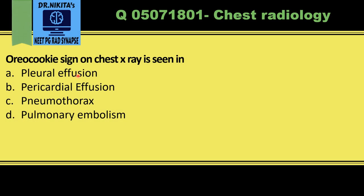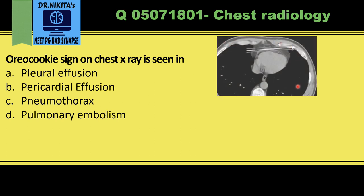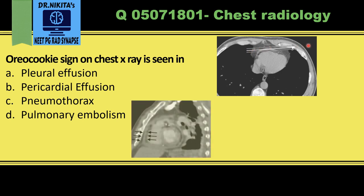The Oreo cookie sign on chest x-ray is seen in pericardial effusion. On this CT scan of the chest, the heart is visible, with a strip of pericardial effusion between the epicardial and pericardial fat. On a sagittal image, we see the pericardial effusion between two black lines — fat appears black due to its negative HU value. The outer black line is pericardial fat and the inner black line surrounding the heart is epicardial fat, with a grey or white line of pericardial effusion between them, just like an Oreo cookie.